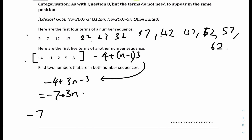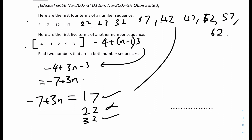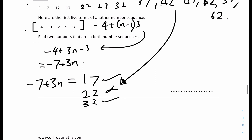Using the second sequence formula 3n − 7, we test values from the first sequence. Equating to 17 gives a whole number, and equating to 22 does not. By trial and error, the numbers that appear in both sequences are 2, 17, 32, 47, and 62.